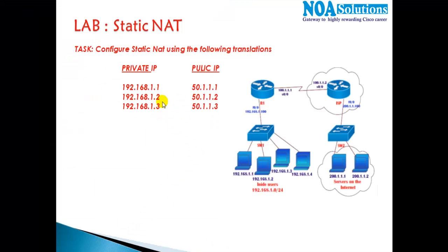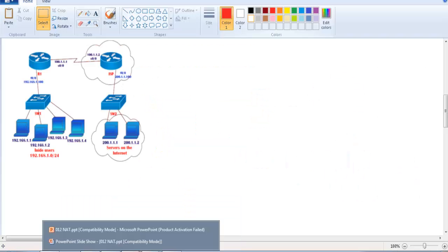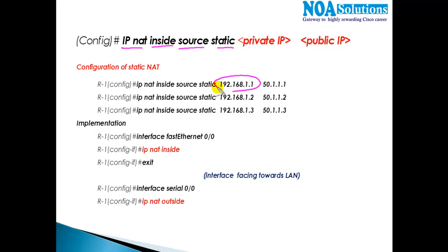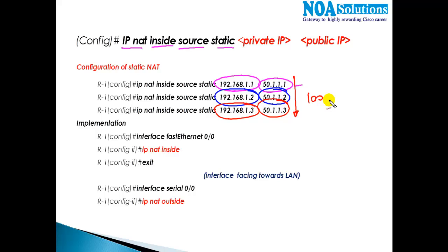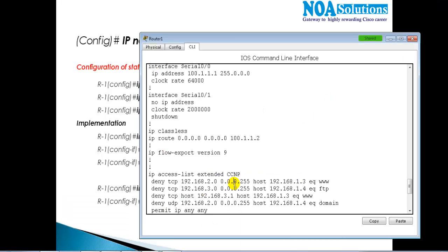My requirement is that 192.168.1.1 should go with 51.1.1.1 - that's the translation requirement. To configure this, it's a very simple configuration. In config mode we say 'ip nat inside source static' and then specify the private IP address and the equivalent public IP to use when going outside. Similarly, 1.2 maps with 51.1.1.2 and 1.3 maps with 51.1.1.3. If you have 100 translations, you need to manually write 100 lines - this is how static NAT configuration is done.